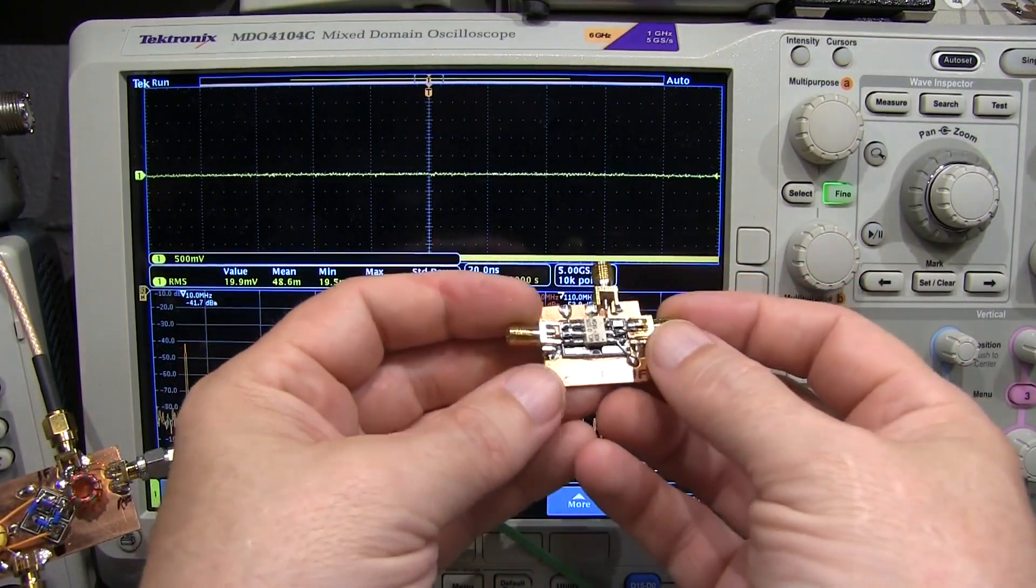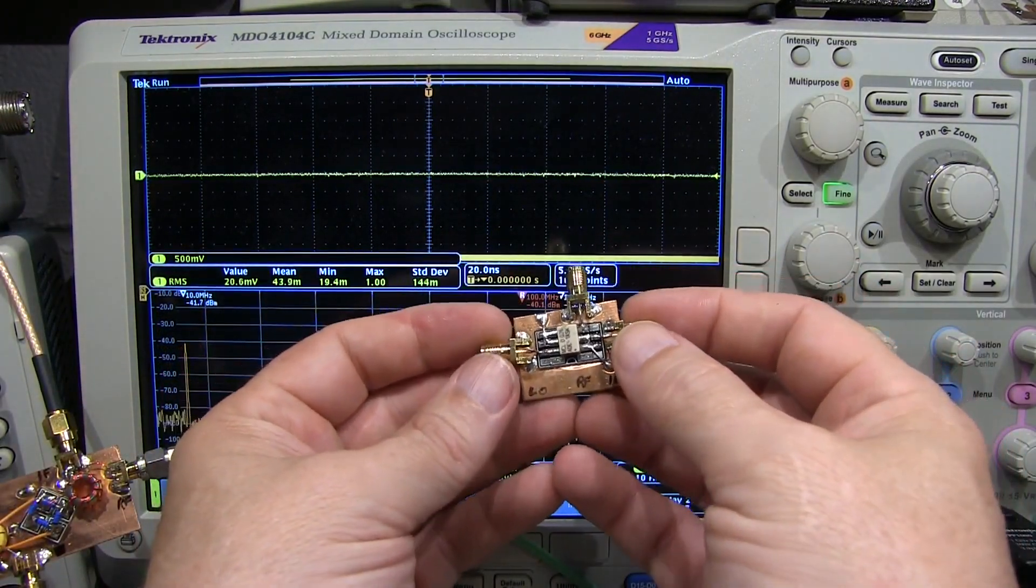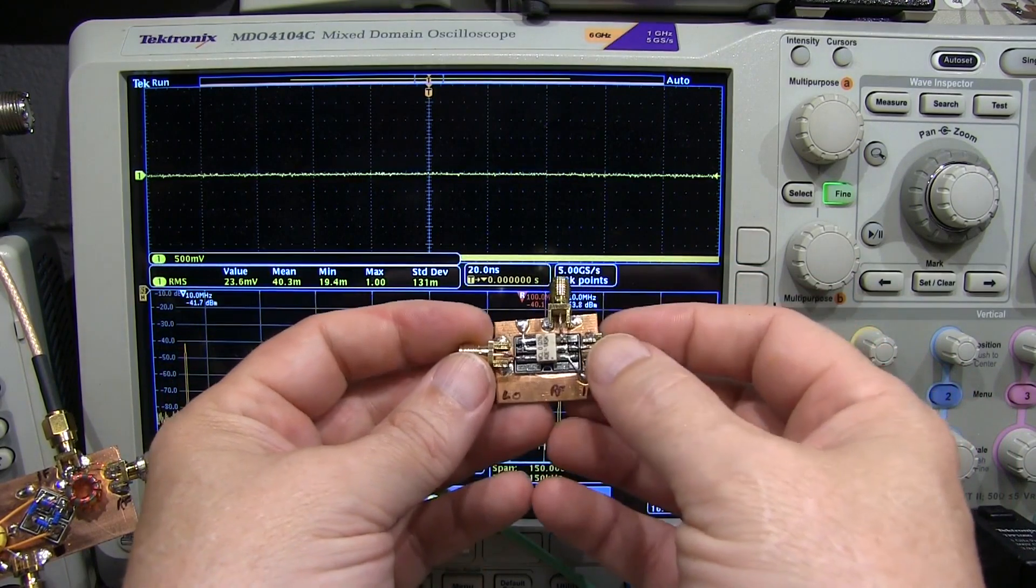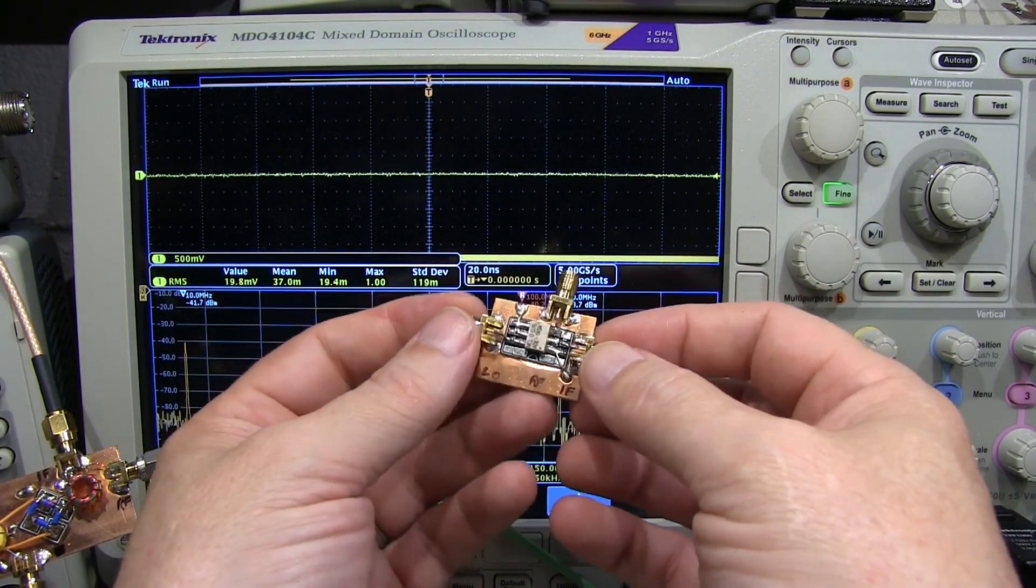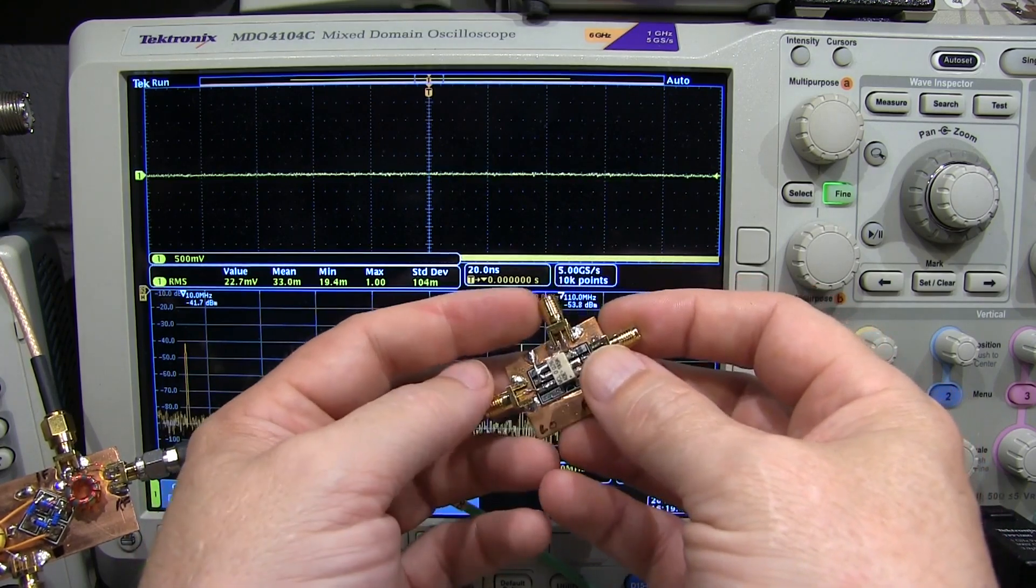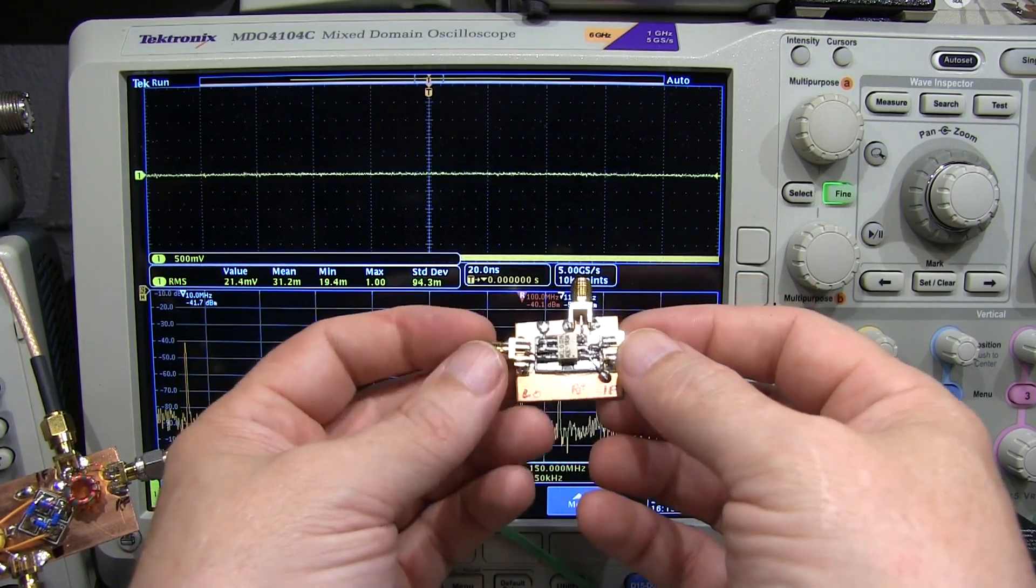And so I hope this video has given you a little bit of insight as to what's meant by the level of a diode mixer, whenever a level 7, level 10, etc. And what that affects when it comes to the mixer's performance.